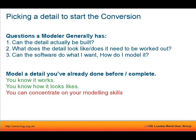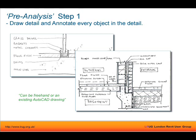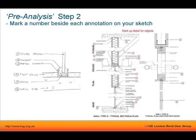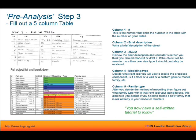I have a method I teach new people in my office where we take the detail and annotate every single item. The next step is to add a number beside each item, listing absolutely everything. Then when you have the number and detail, you fill in a table: the number links the table to the detail, you list what the object is, and you start deciding whether it's 2D or 3D — starting to think how you're going to model it, making a plan of action, deciding on which Revit tool to use. This builds a self-made tutorial on how to build that detail.